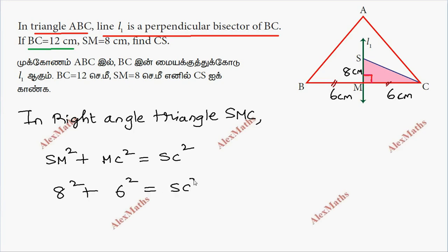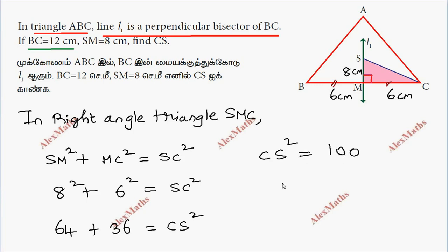So SC squared equals 100. Therefore CS equals the square root of 100, so CS is equal to 10 centimeters.